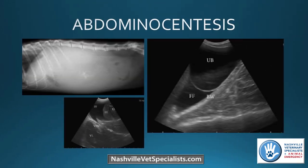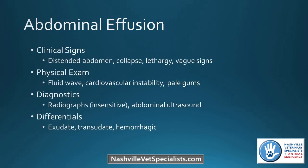The next procedure is an abdominocentesis. Here are some images — that top radiograph shows a lot of peritoneal effusion. The 'FF' label on ultrasound images indicates free fluid around the bladder and around the liver lobe. Clinical signs of abdominal effusion include a distended abdomen, and sometimes these patients come in for collapse or lethargy with vague clinical signs.